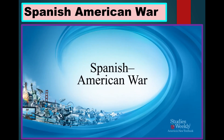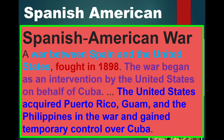The next thing is the Spanish-American War — a war between Spain and the United States fought in 1898. The war is fought as an intervention by the United States on behalf of Cuba. As a consequence of the United States winning the Spanish-American War, it will acquire the territories of Puerto Rico, Guam, and the Philippines, as well as temporary control over Cuba.